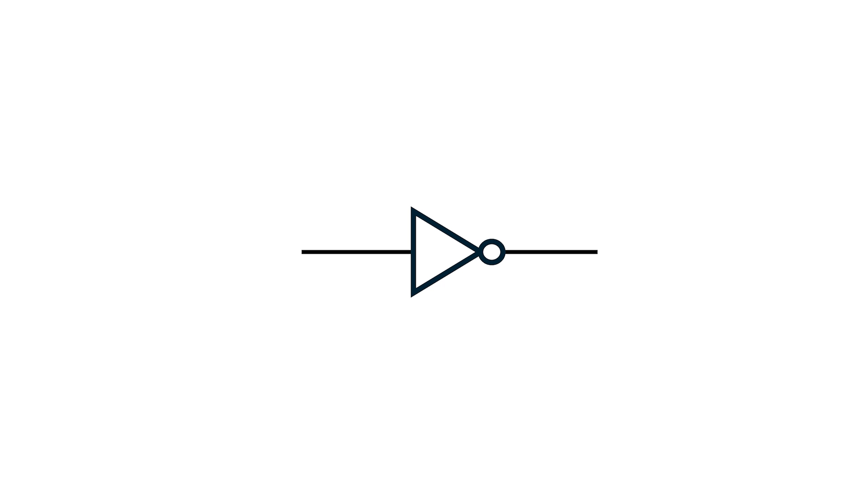In the last few videos, we saw how connecting the output of an inverter back up to its own input created an astable circuit that spontaneously oscillated.